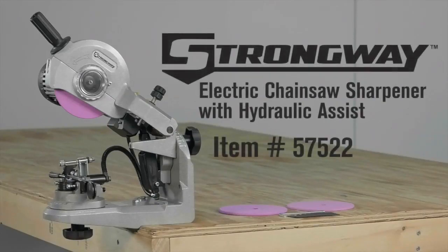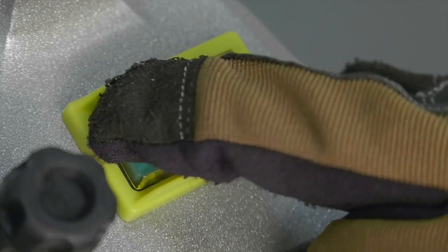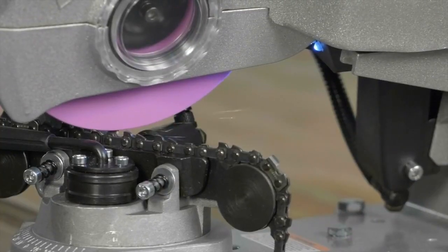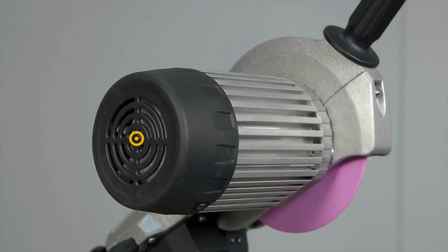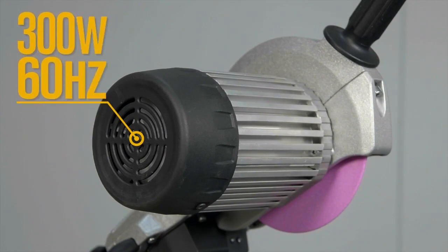This electric chainsaw sharpener with hydraulic assist from Strongway gives you maximum grinding speed for total sharpening power. Quickly sharpen chains with the powerful commercial grade 300 watt, 120 volt motor.